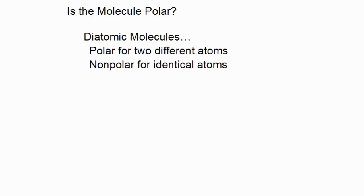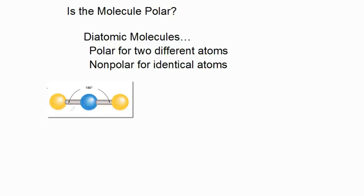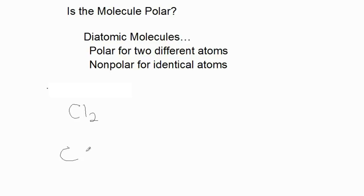Now we'll look at diatomic molecules — two atoms in a molecule. If the two atoms are identical, the molecule is not polar. If there are two different atoms, there's going to be some polarity — like a tug of war. Diatomic molecules should be very intuitive because they are linear. Cl2 has no central atom and no polarity, because both chlorines are equally sharing the electrons. This is a nonpolar molecule.